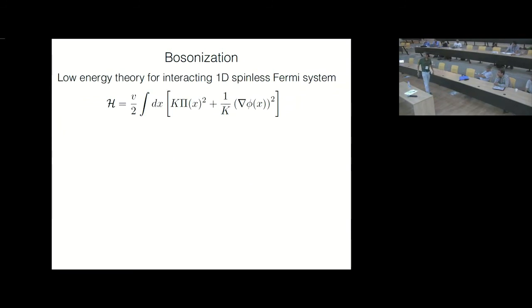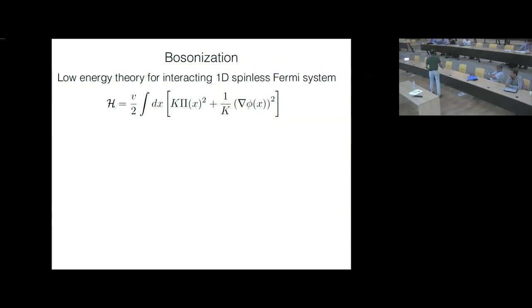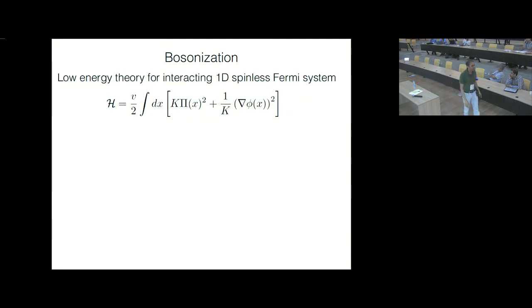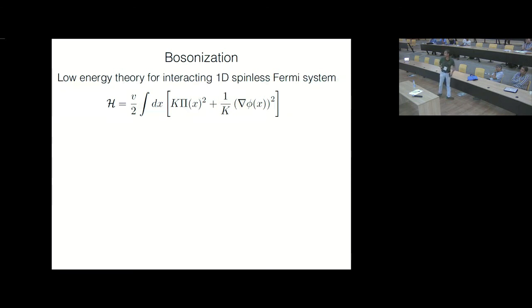We've treated this problem in the language of bosonization. As many of you know, when you have a one-dimensional system of fermions — forgetting about interactions for the time being, just a free fermion gas in one dimension — you actually have stable particle-hole excitations which behave like bosons, and these are the low energy excitations. So the low energy physics of such a system can actually be written in terms of these bosonic excitations. This can be done only in one dimension, and that is called bosonization.